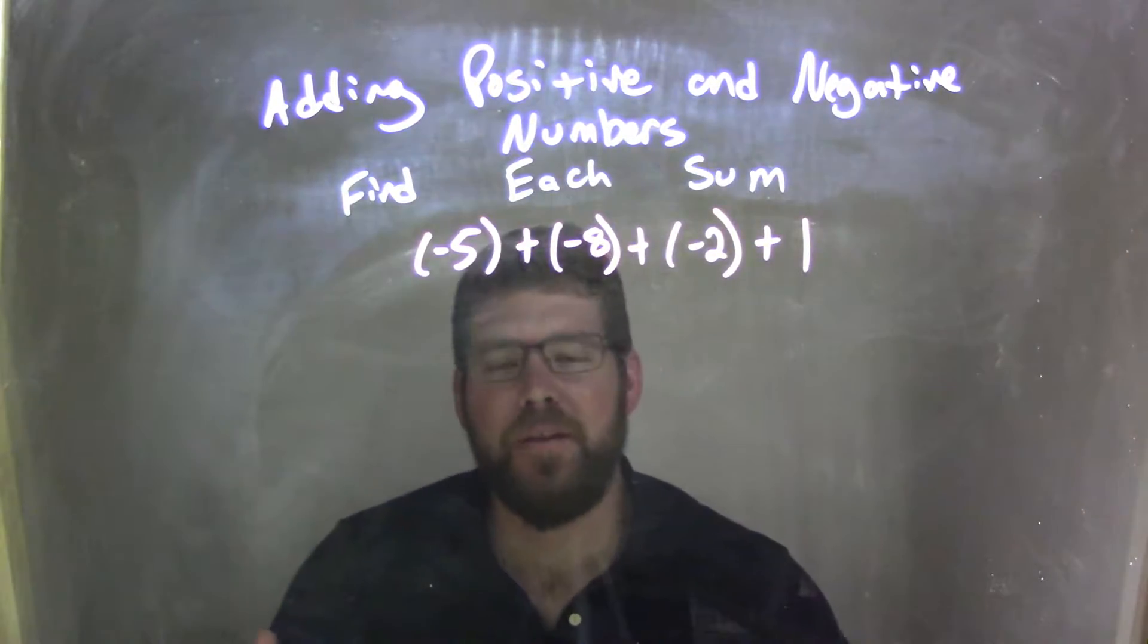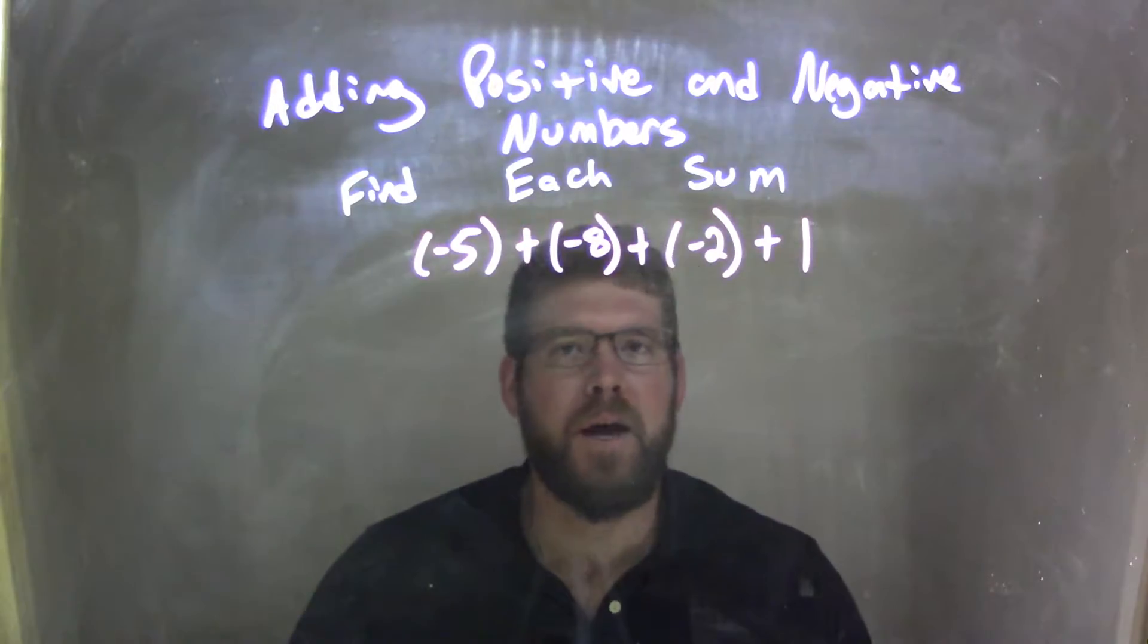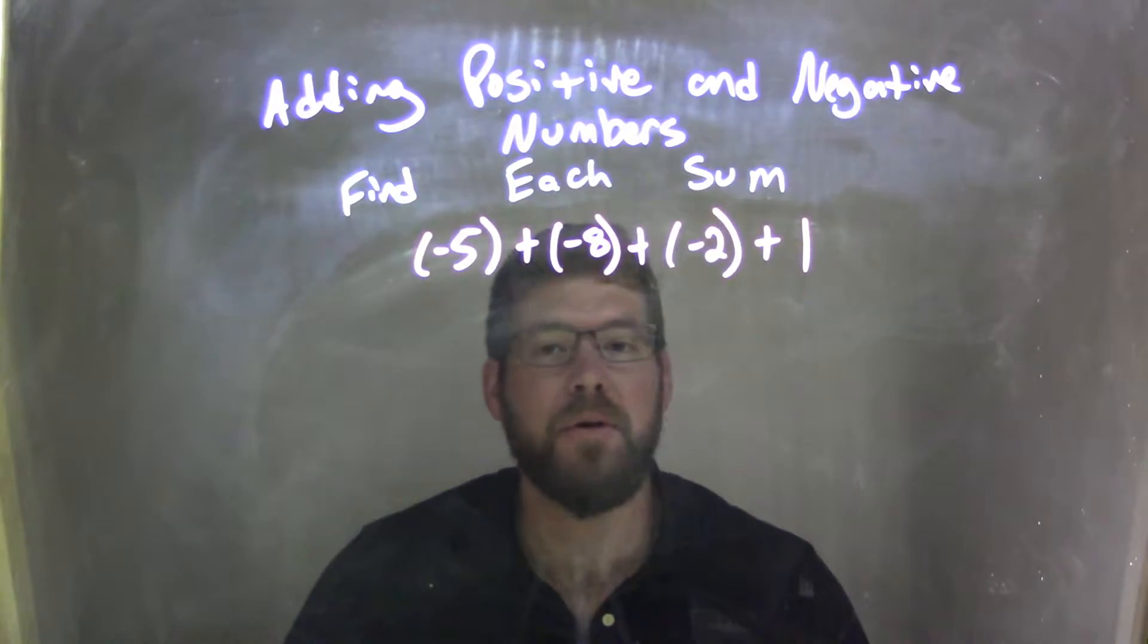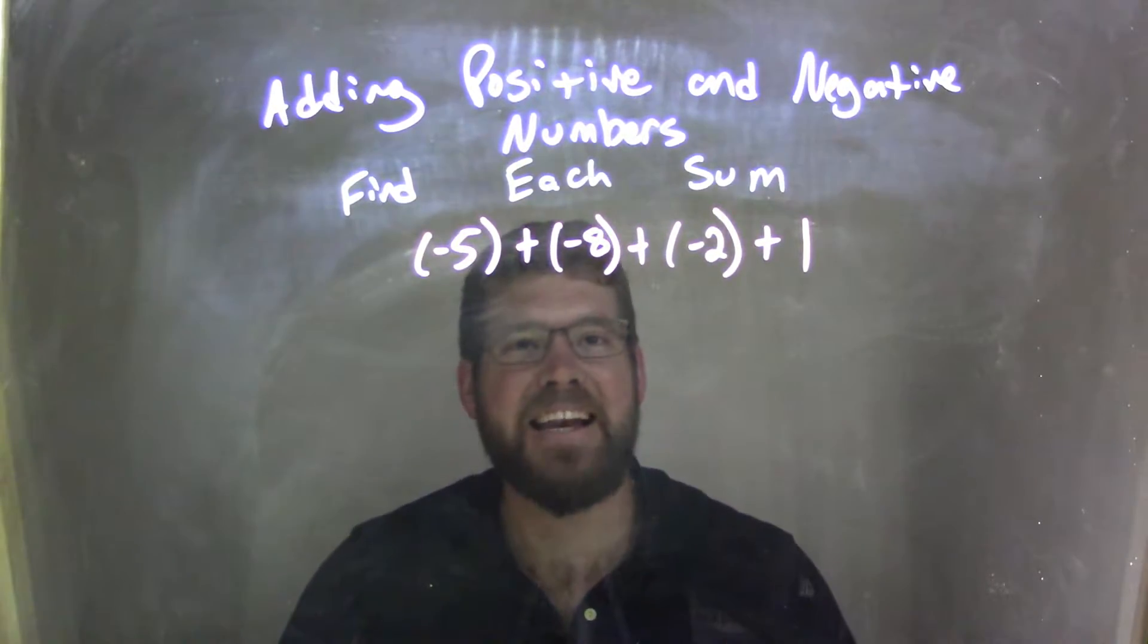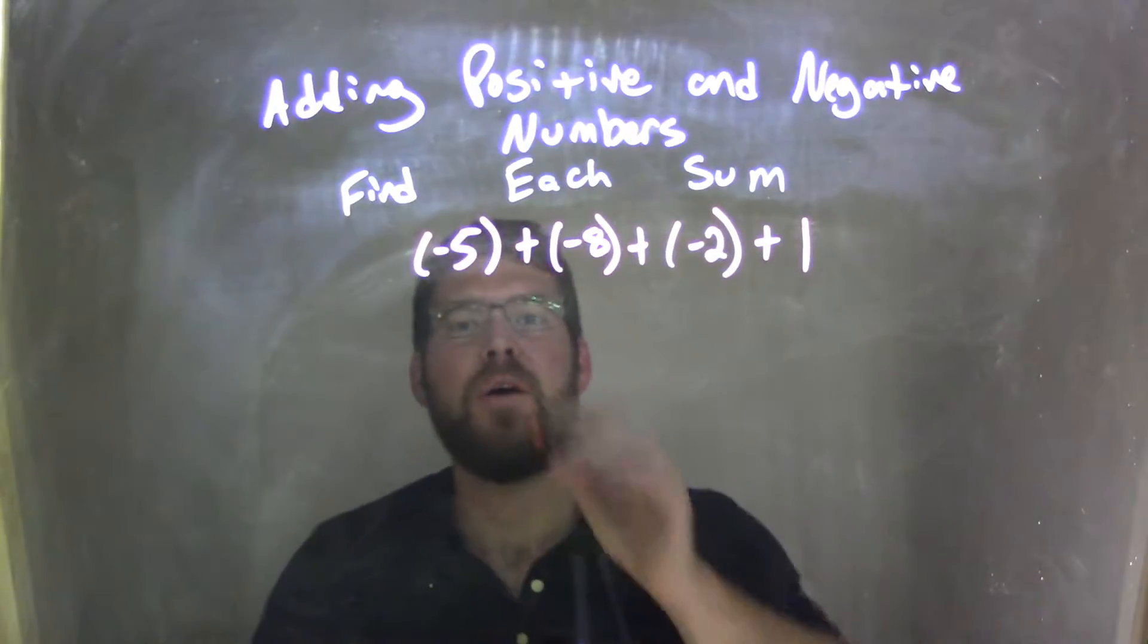At first I was thinking of negative 5 and negative 8, but what really caught my eye was negative 8 and negative 2. I know if I add those two together, I can get negative 10. So let's rearrange.